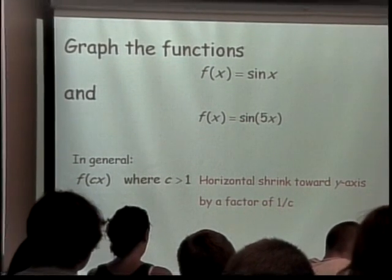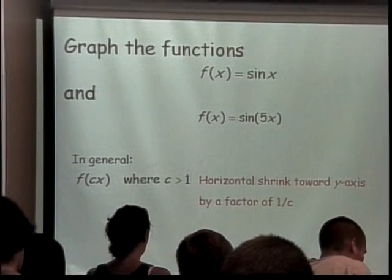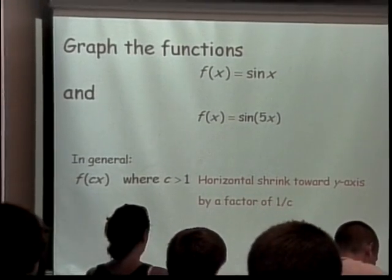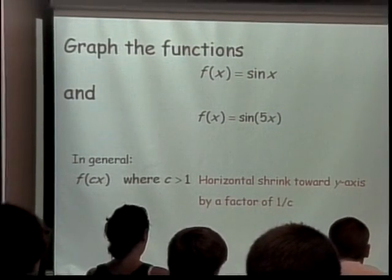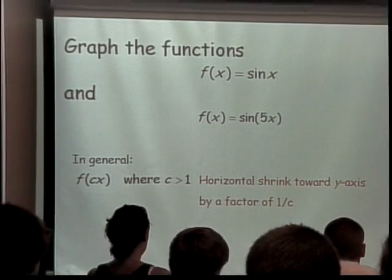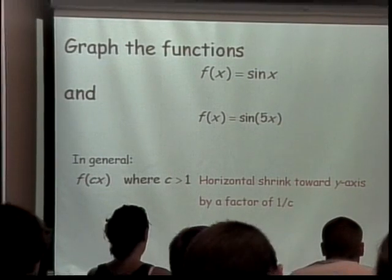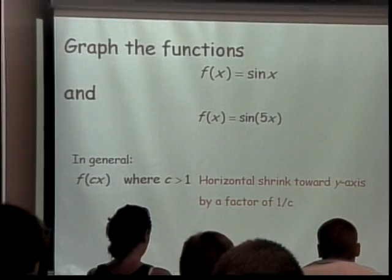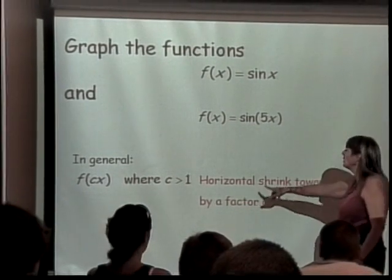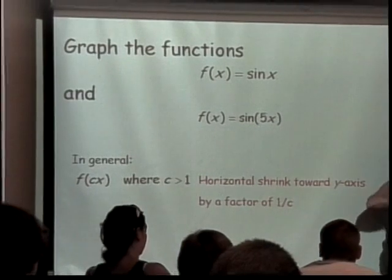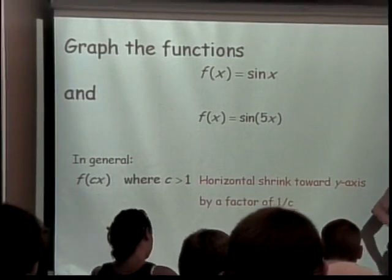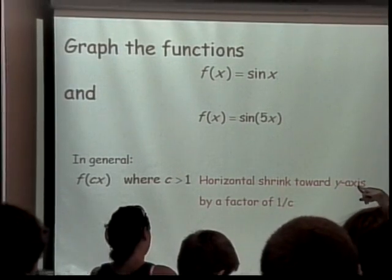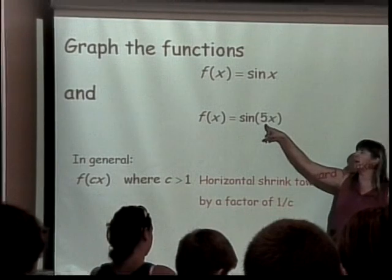So what happened when you put in that five? Yeah, instead of having two ups and two downs, we now have ten. All the ups and downs got squished together. So this five here did a horizontal shrink. Notice it still goes as high and still goes as low as it did before. But there's a lot more of them.